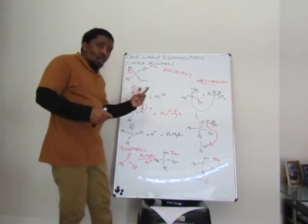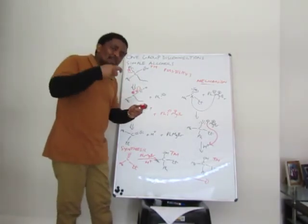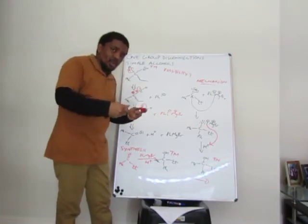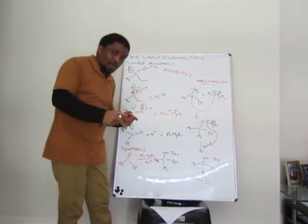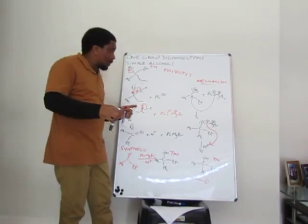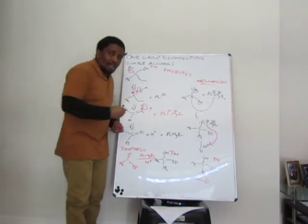You choose a possibility that's going to give you a carbanion that is the most stable of all the carbanions. So you have seen here, I've got my Ph carbanion in possibility three.